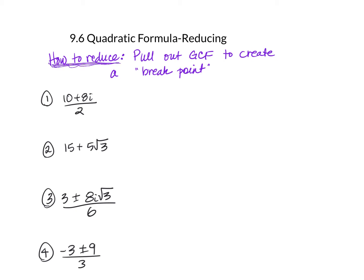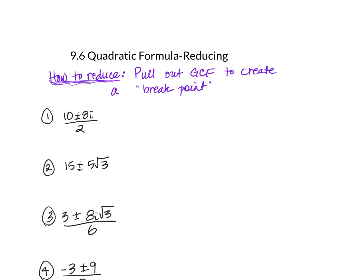Let's look at number one. Notice that this is 10 plus or minus 8i. This plus or minus right here joins that 10 and that 8 together — you cannot separate them out. The temptation is to say 2 and 8 I can reduce, and 2 and 10 I can reduce. But you can't really do that. You've got to take a GCF out of everything on the top for this to work.